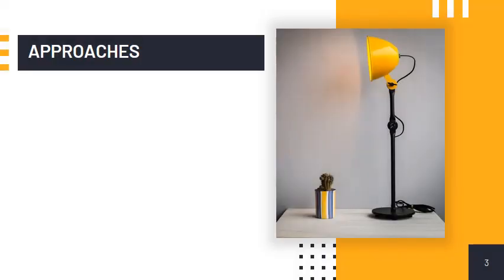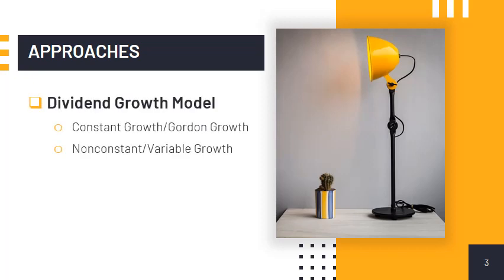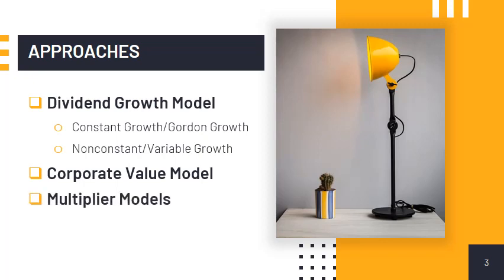The three main methods to valuing common stock are the following: the dividend growth model, the corporate valuation model, and the multiplier models. The dividend growth model and the corporate valuation model use discounted or intrinsic valuation approach. On the other hand, the multiplier models are consistent with relative valuation approach.